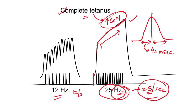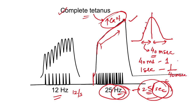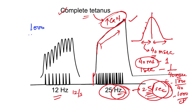For complete tetanus, the second stimulus must always fall within the contraction period — within 40 milliseconds. So in one second, the number of stimuli required is 1000 divided by 40, which equals 25 hertz. In general, the tetanizing frequency can be written as: frequency = 1000 divided by the contraction period in milliseconds. This is known as the tetanizing frequency.